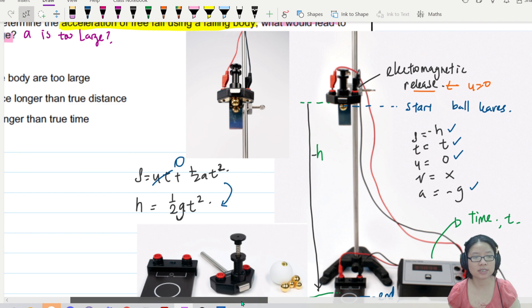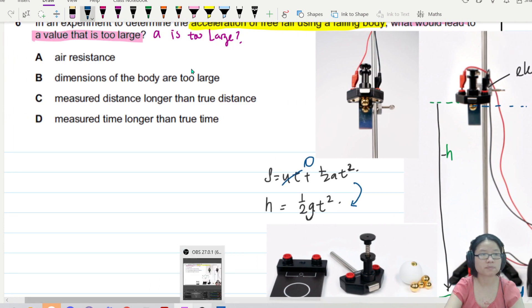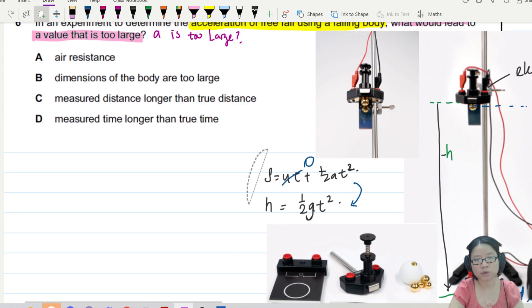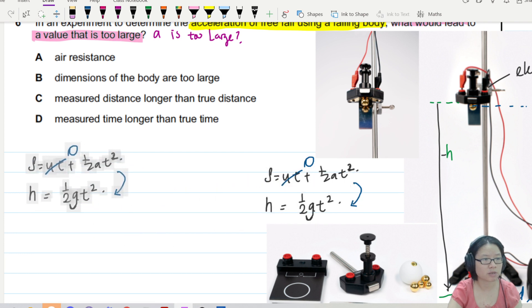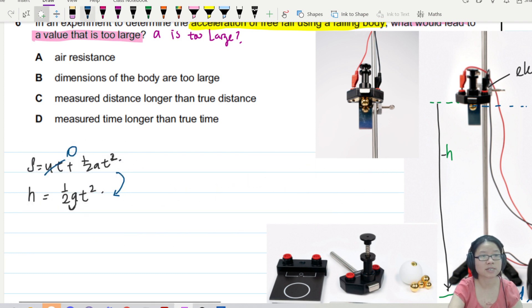So now, I can actually see, if let's say I want to find G. Let's say we want to find G. How shall we manipulate the equation? Because we are looking for acceleration of freefall. So in this case, I will rearrange this and I will get G is equal to 2H over T squared.